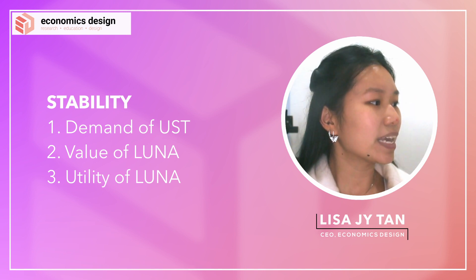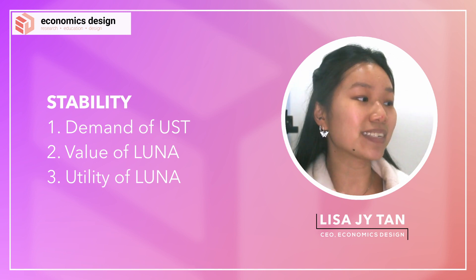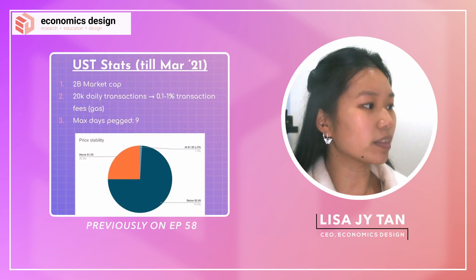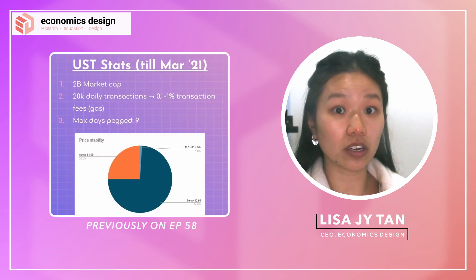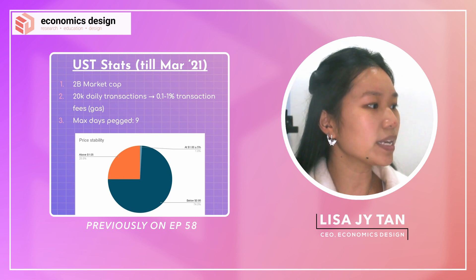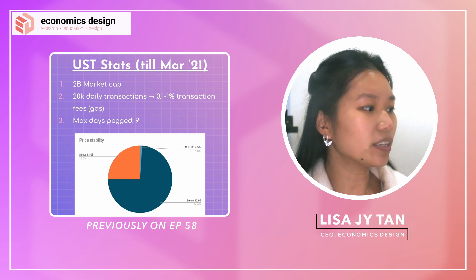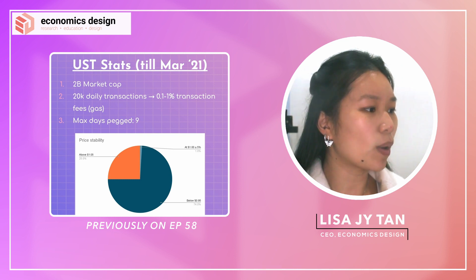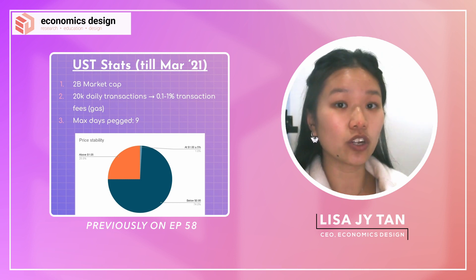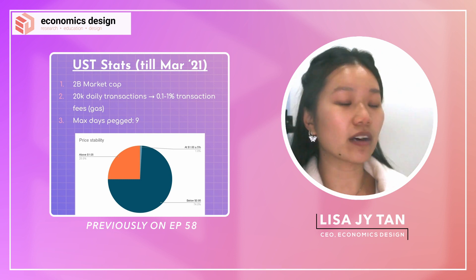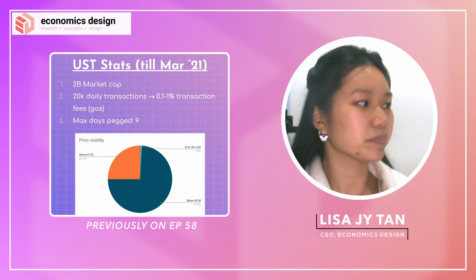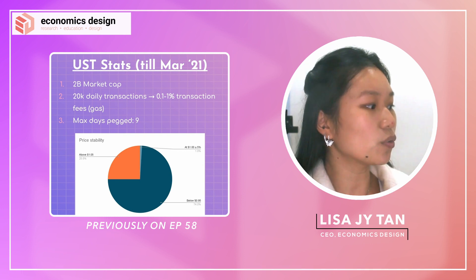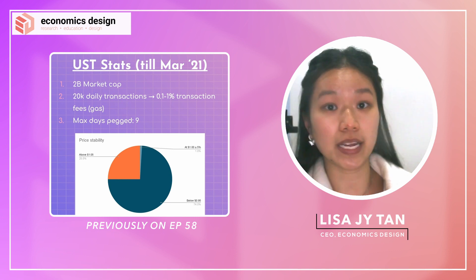What I want to highlight now are the corrected statistics. Previously I showed that there is $2 billion in market cap and 20k daily transactions, and of all the different days that I analyzed, only 1% is at that $1 range and everything else is out of peg. A few of you pointed that out, and I agree — the numbers were wrong. So here is a quick update on the statistics.